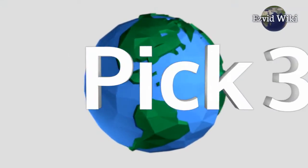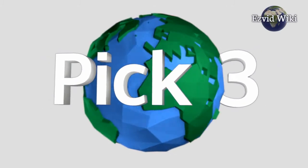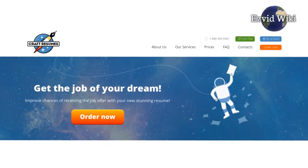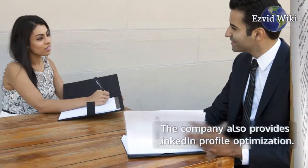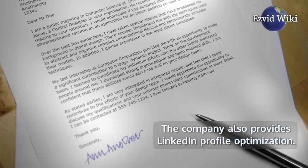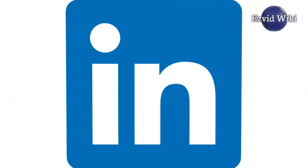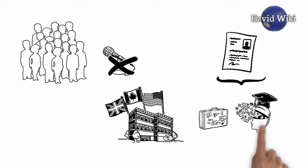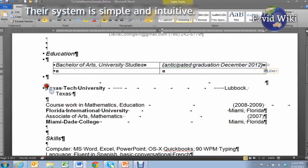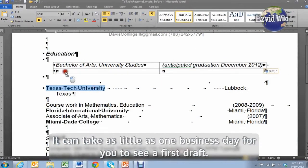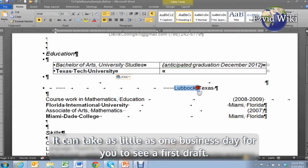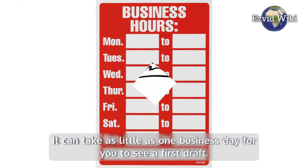Pick number 3. Craft Resume is our number 3 choice. Craft Resume is an agency devoted to the creation of quality resumes, CVs, and cover letters. The company also provides LinkedIn profile optimization. They're dedicated to a greater degree of transparency than much of the market. Their system is simple and intuitive. It can take as little as one business day for you to see a first draft.